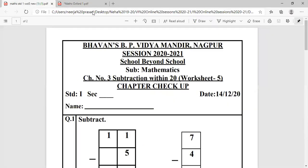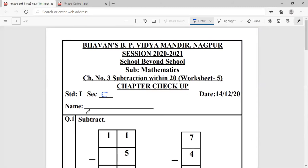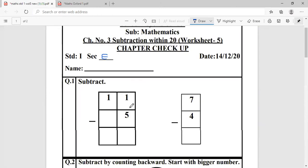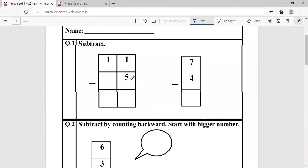We come to today's worksheet which is worksheet subtraction within 20 worksheet number five. What you have to do? Write section first E and write your full name in cursive writing here. Same kind of sum is given. Here we will do counting forward to subtract. So from five till eleven. Six, seven, eight, nine, ten, eleven. Answer is six.